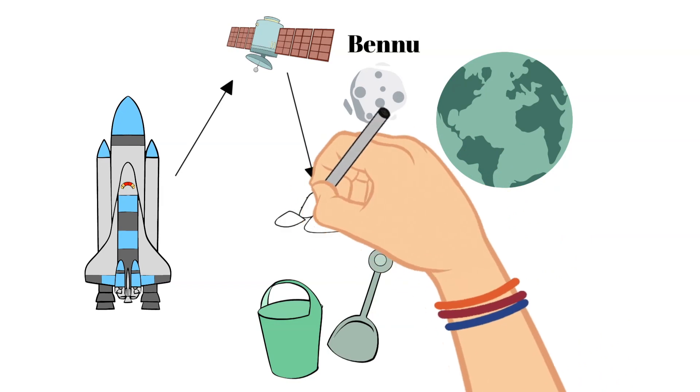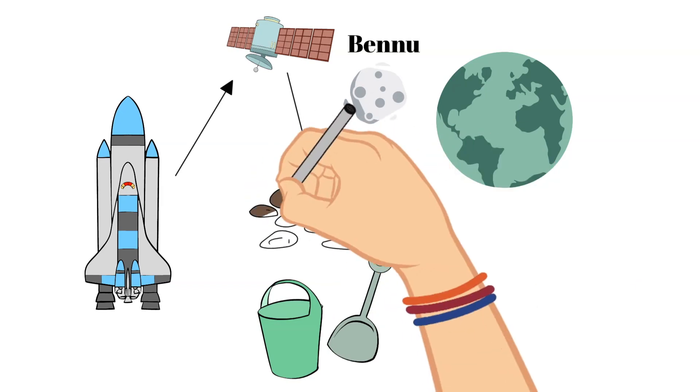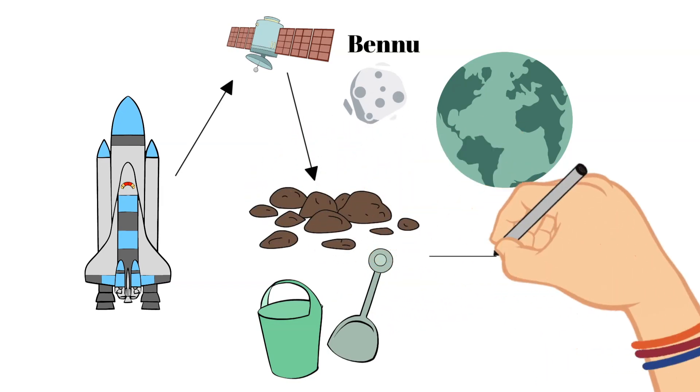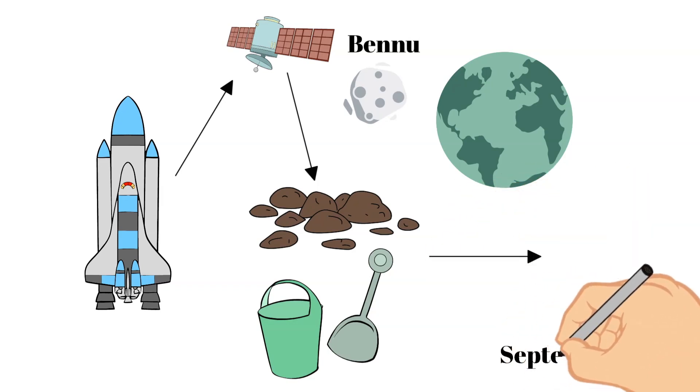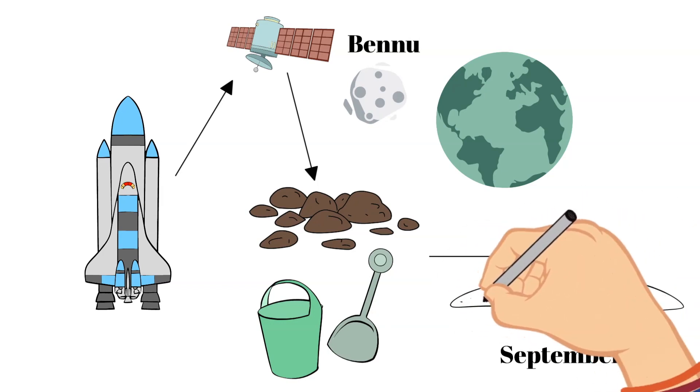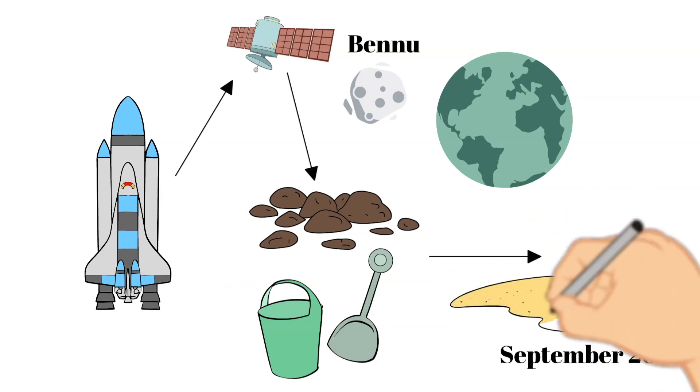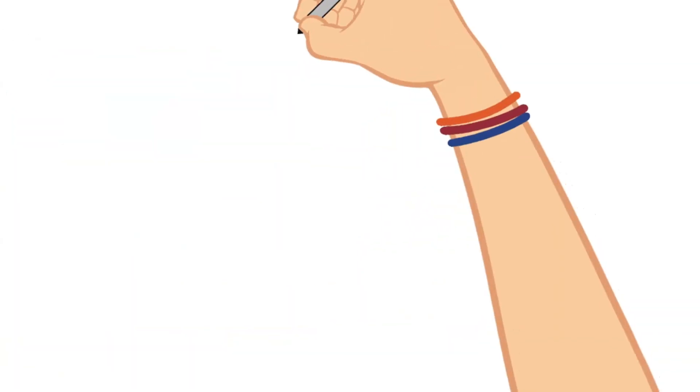The spacecraft started to head back home to Earth. This container is set to land in the Utah desert in September of 2023, and this will greatly help scientists in studying further about asteroids.